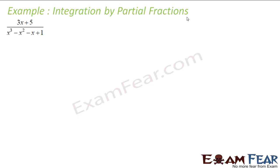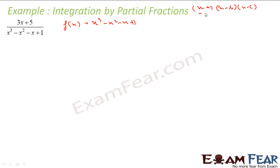Let's take one more example: the integral of (3x + 5) divided by (x³ − x² − x + 1). To apply partial fractions, I need to convert the denominator into (x − a)(x − b)(x − c) form. Let f(x) = x³ − x² − x + 1. I need to find three roots that make f(x) = 0.